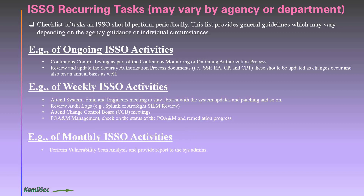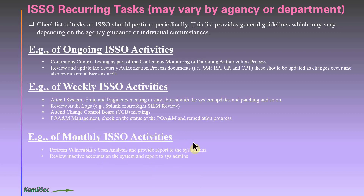For monthly ISSO activities: perform vulnerability scan analysis and provide reports to system admins so they can see newly identified vulnerabilities and begin remediation. If a vulnerability can be remediated within 30 days, a POA&M is not required. However, if it cannot be fixed within the first 30 days, you are required to create a POA&M to track it to completion.